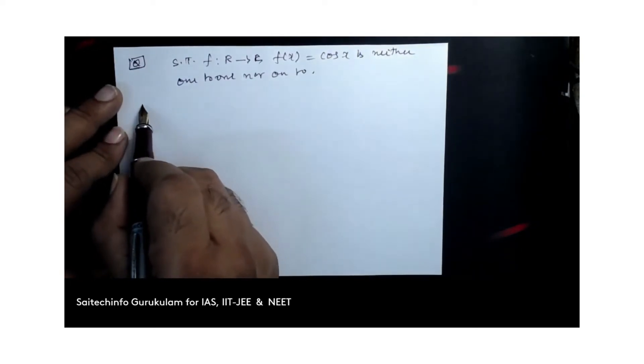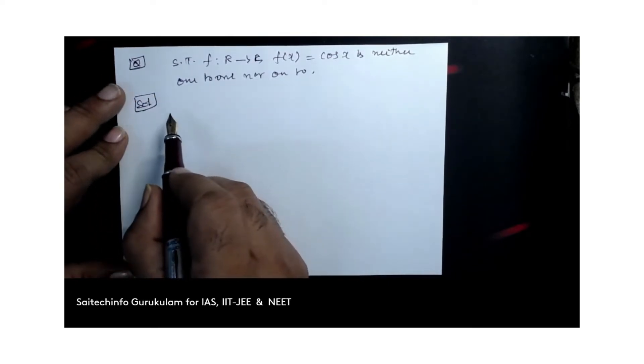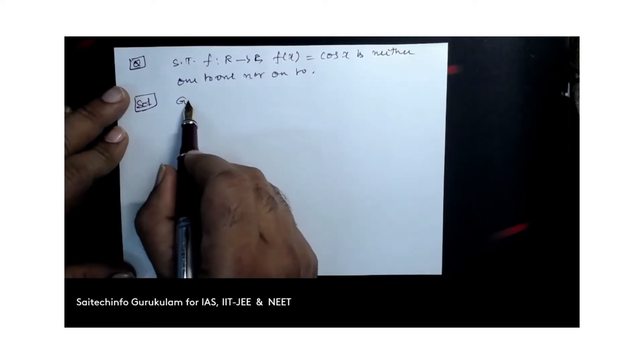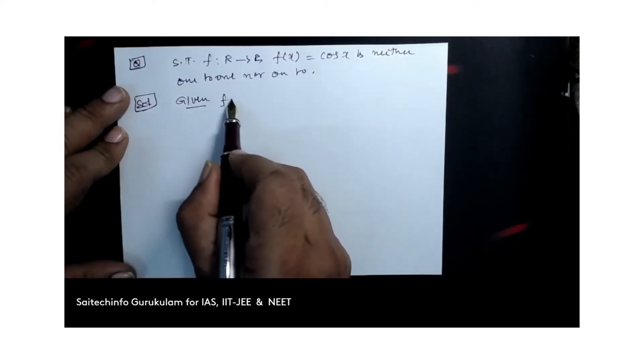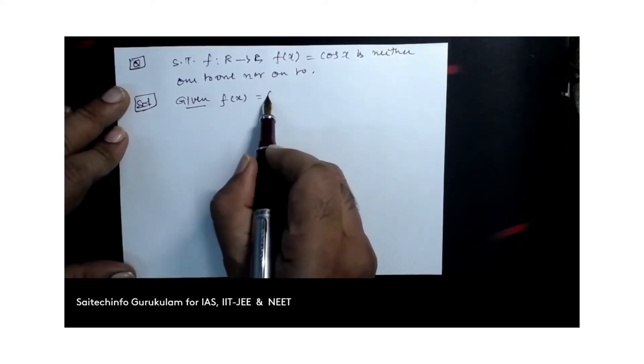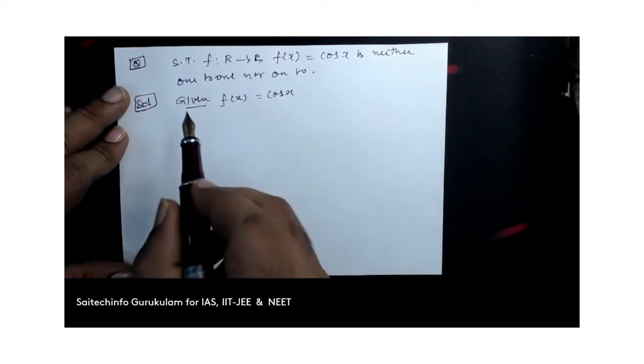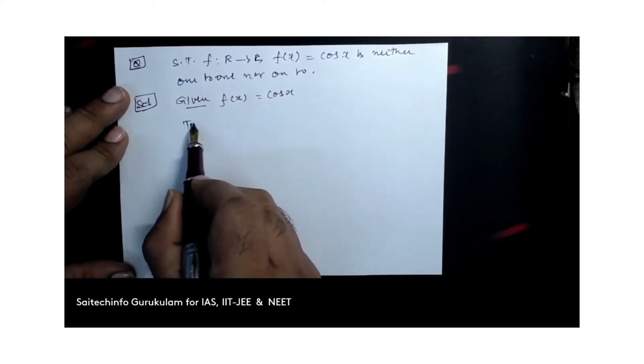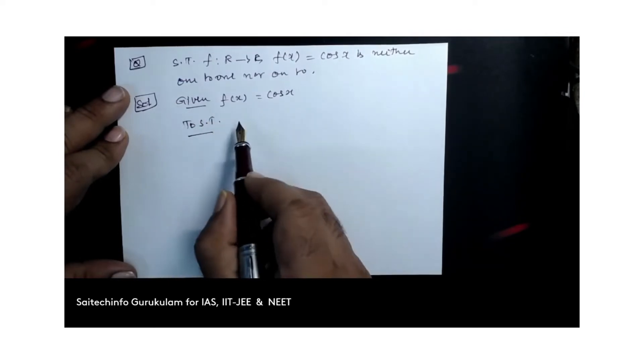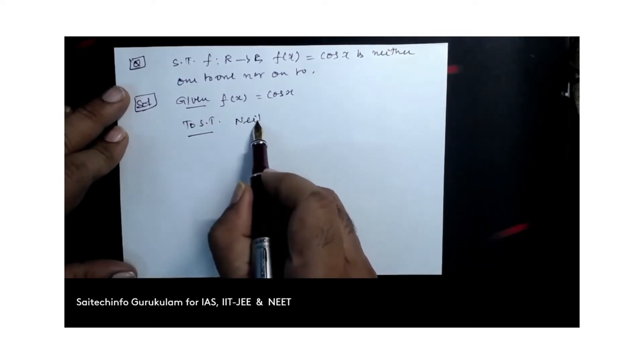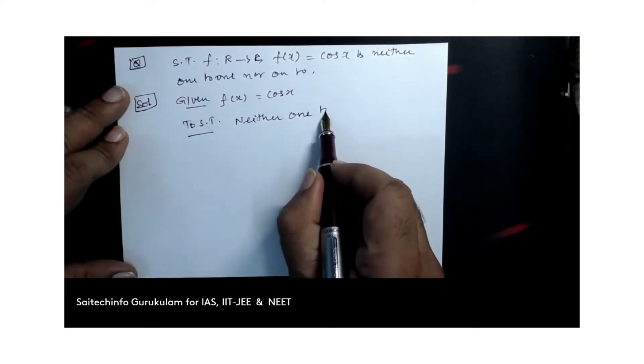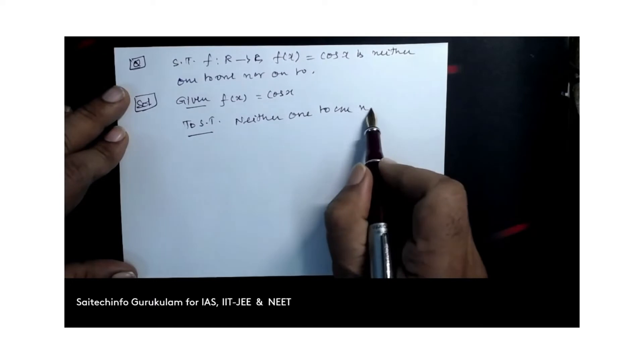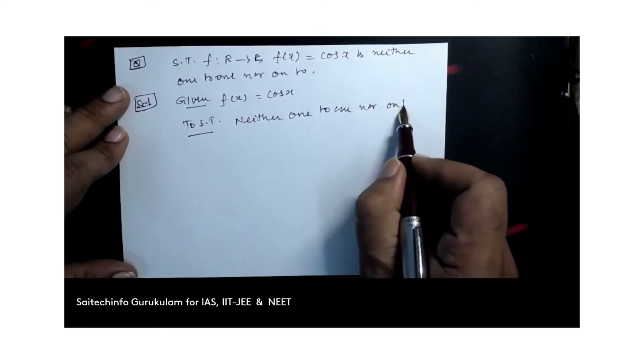So we need to show that it is neither one-to-one nor onto. Given is that f of x equals cos x. So to show that, this is the question asked: neither one-to-one nor onto.